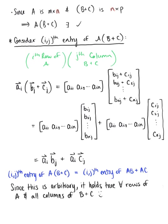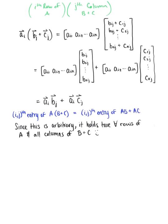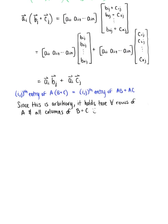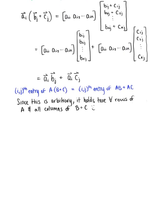We are ready for the big finale. We can write our final conclusion: therefore, the left-hand distributive law holds true — that matrix A multiplied by the sum of matrix B plus matrix C is equal to the product of matrix A times matrix B plus the product of matrix A times matrix C. End proof.